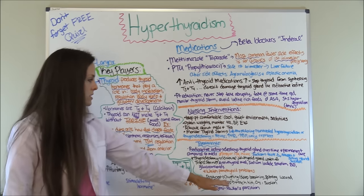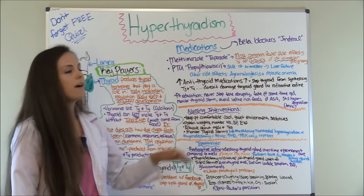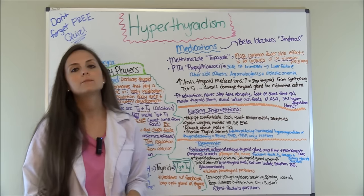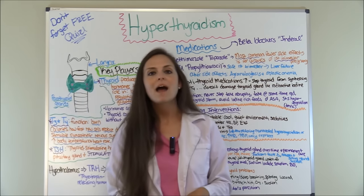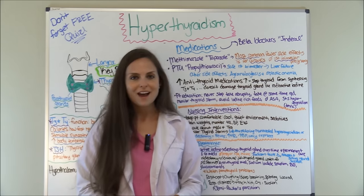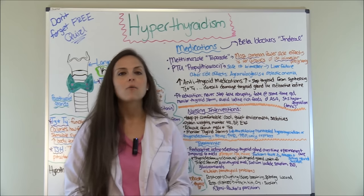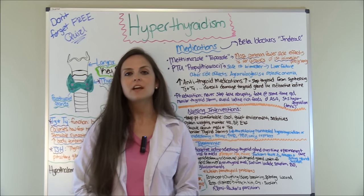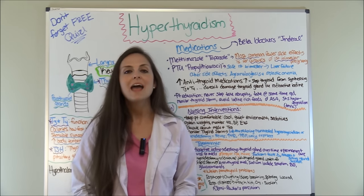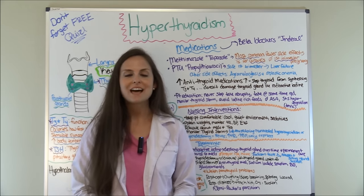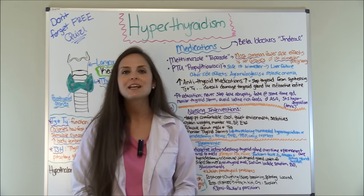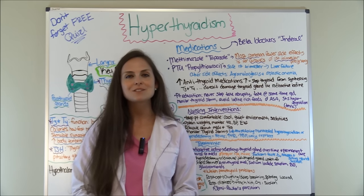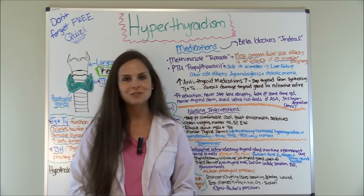The best position for patients who've had a thyroidectomy is semi-Fowler's. That covers hyperthyroidism — now watch the next video on hypothyroidism, don't forget to take the free quiz on my website RegisterNurseRN.com, and please consider subscribing to this YouTube channel. Thank you so much for watching.